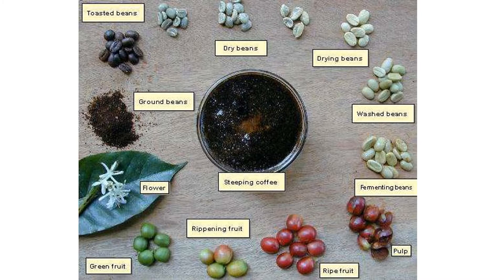Here we see the various stages of seed formation and processing, from the flower in which the gametes originate, to the fruit which encases the seed, to the seed which itself may be fermented, dried, roasted, and ground to make the drink we know as coffee.